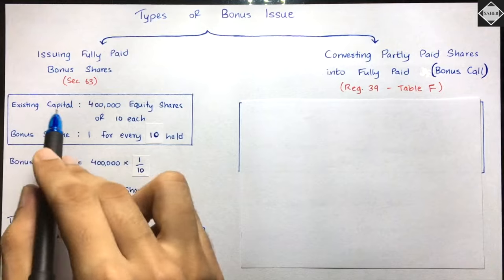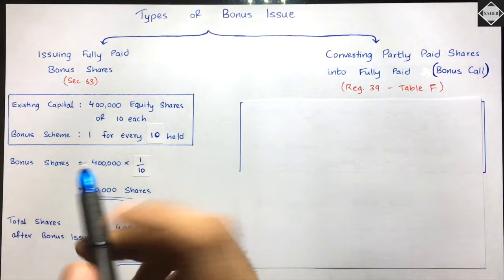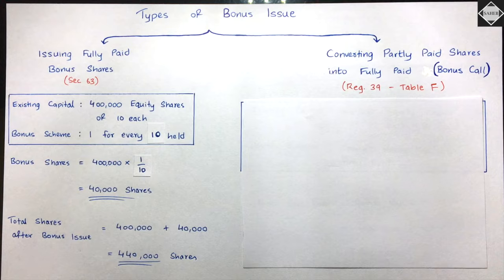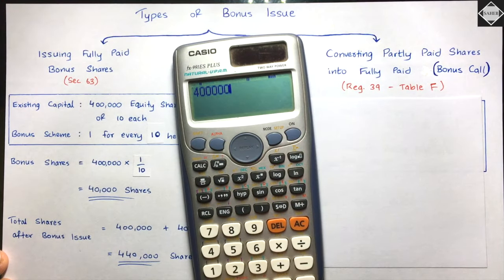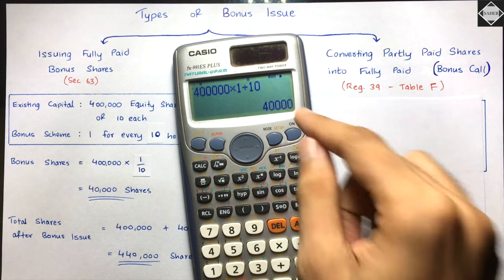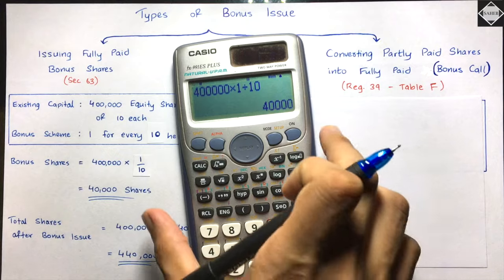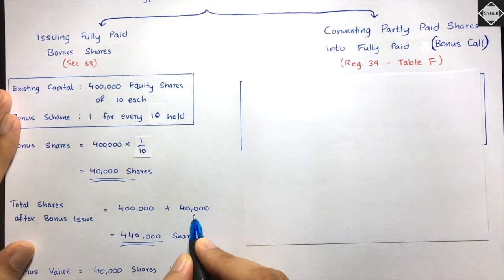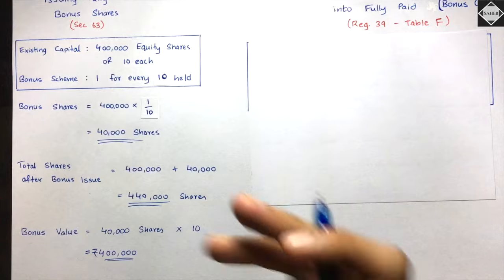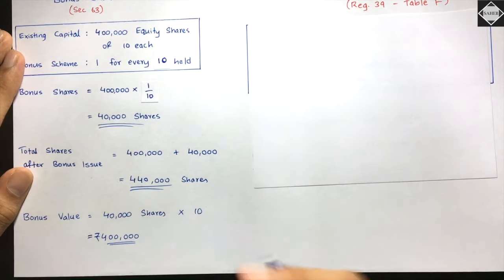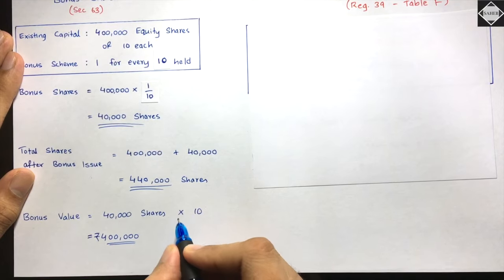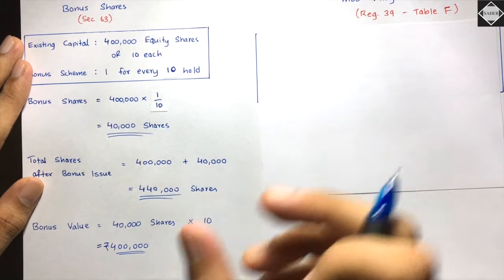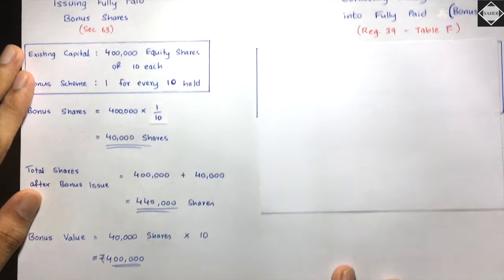Example for Type 1: existing capital is 4 lakh equity shares of ₹10 each; bonus scheme is 1 for every 10. Bonus shares = 4 lakh × 1/10 = 40,000 equity shares. Total shares after bonus = 4 lakh + 40,000 = 4 lakh 40,000. Value of the bonus = 40,000 shares × ₹10 = ₹4 lakh.